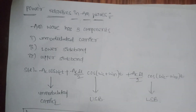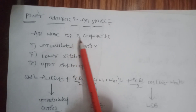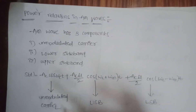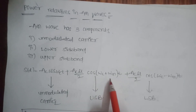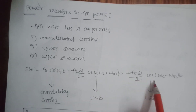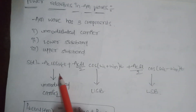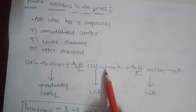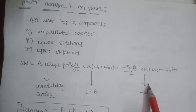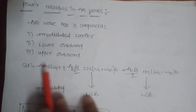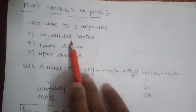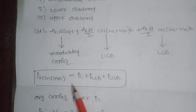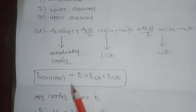Power calculations in AM waves. The standard AM wave S(t) = AC·cos(ωc·t) + (AC·μ/2)·cos((ωc+ωm)t) + (AC·μ/2)·cos((ωc−ωm)t). This has no message frequency component on its own. The first term is the unmodulated carrier signal, the plus term is the upper sideband (USB), and the minus term is the lower sideband (LSB). So the standard AM wave has three components: unmodulated carrier, lower sideband, and upper sideband. Now we consider the power consumed by the AM wave to transmit from the transmitter to the receiver.